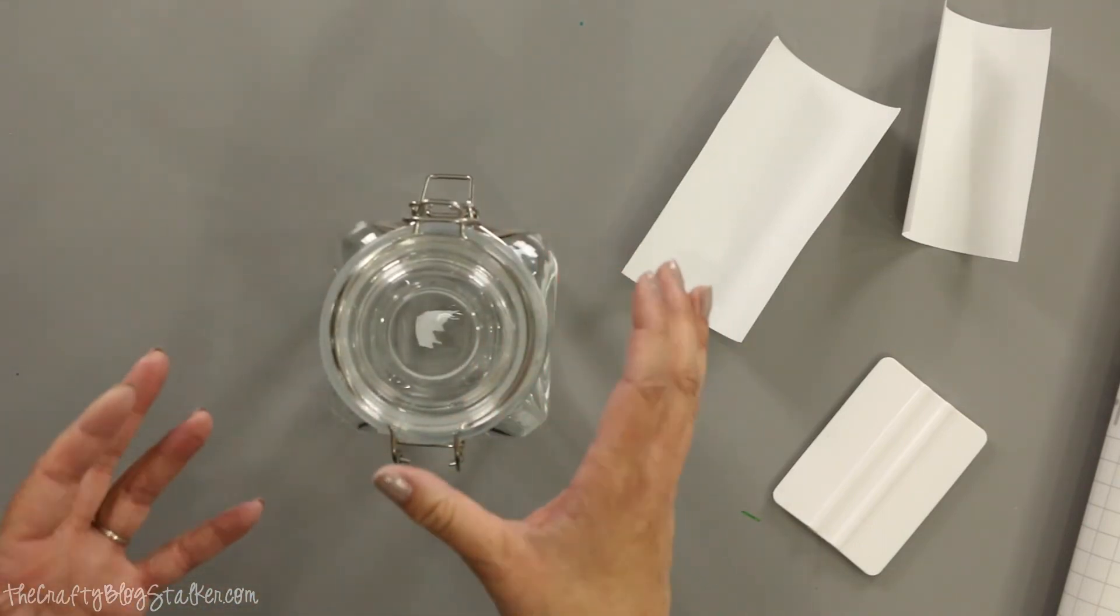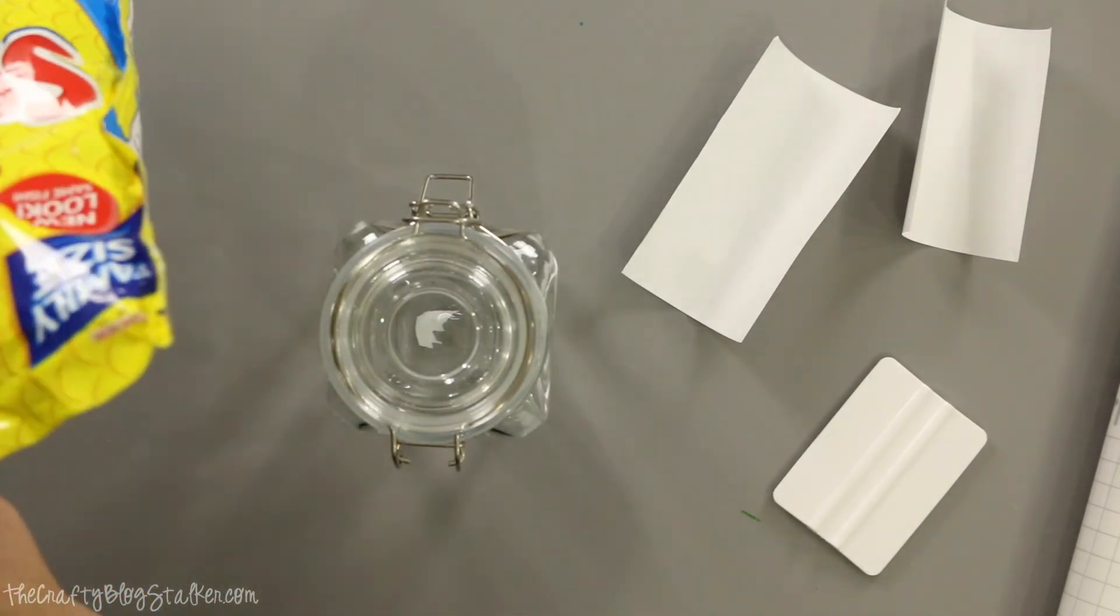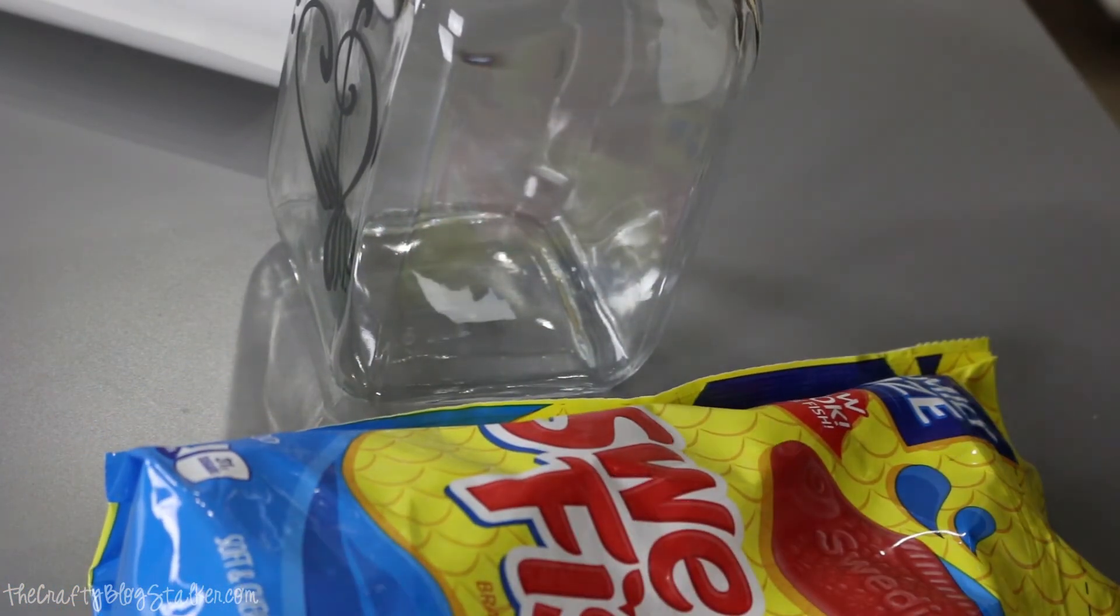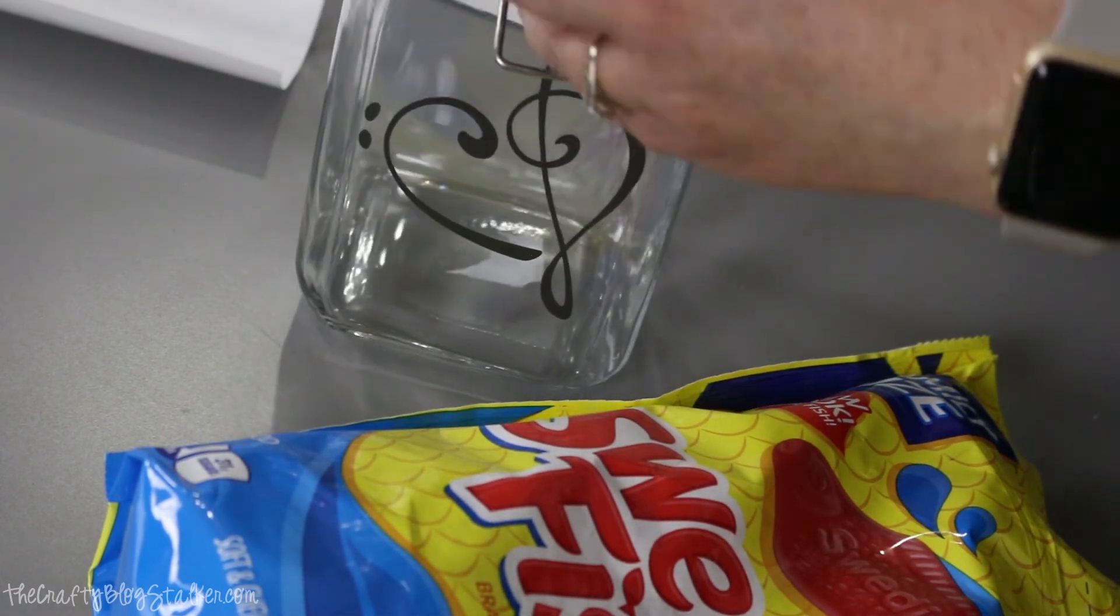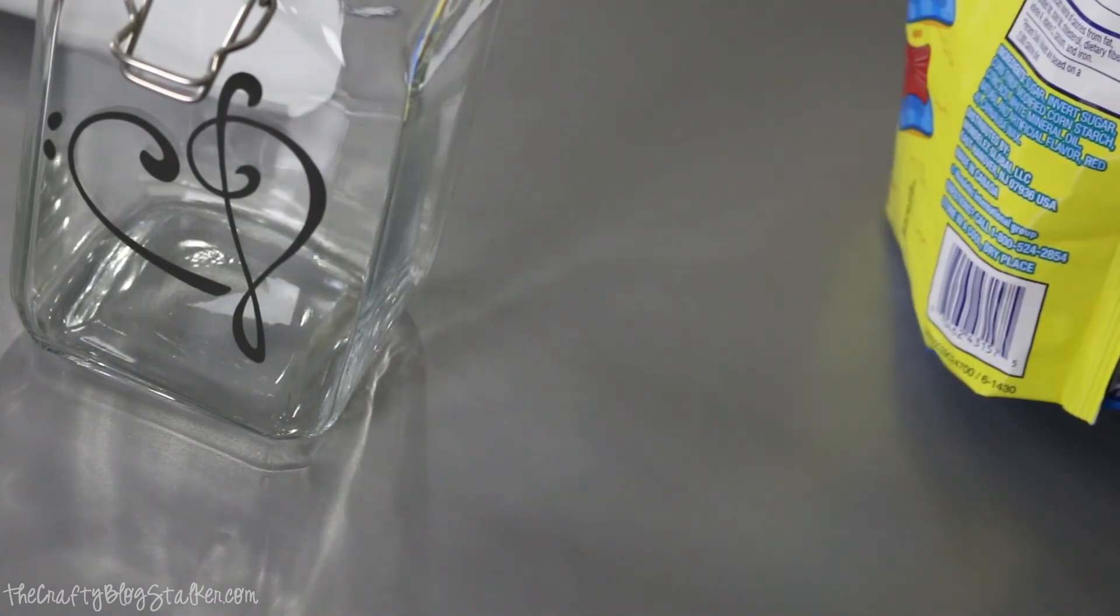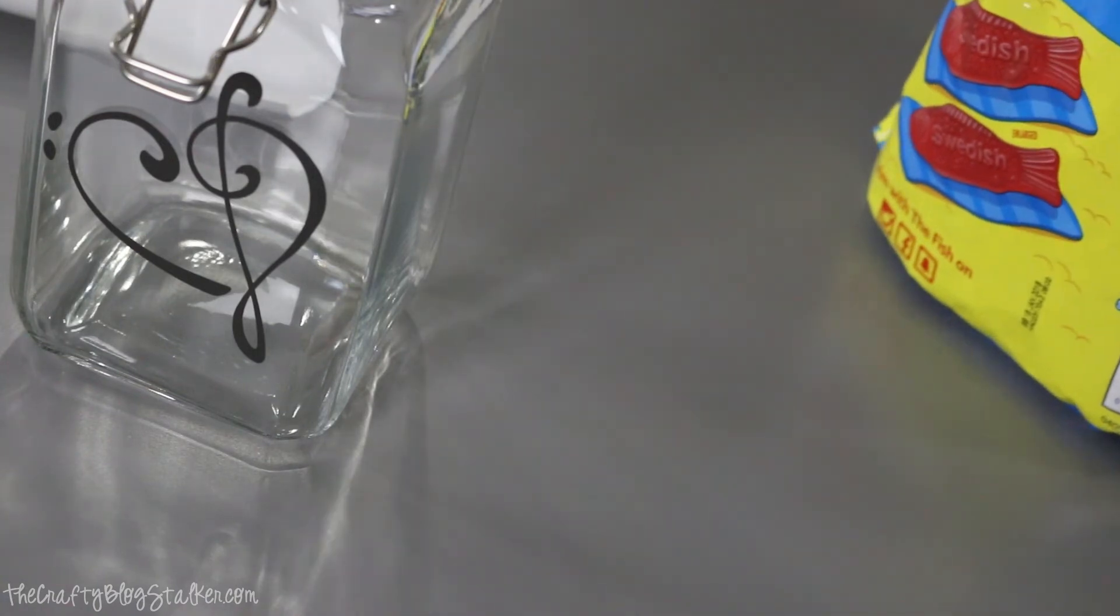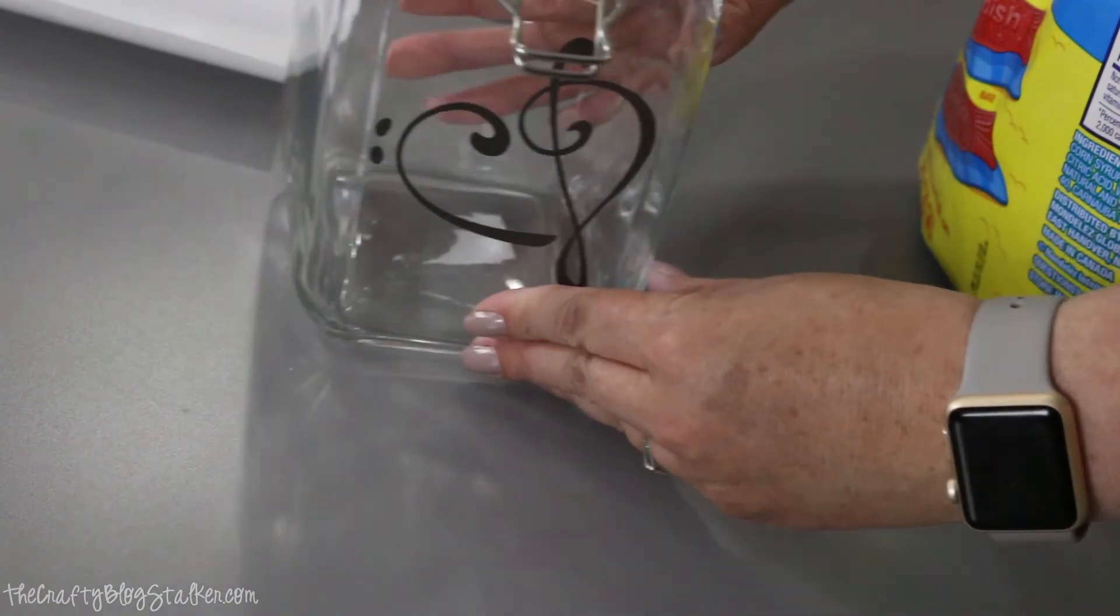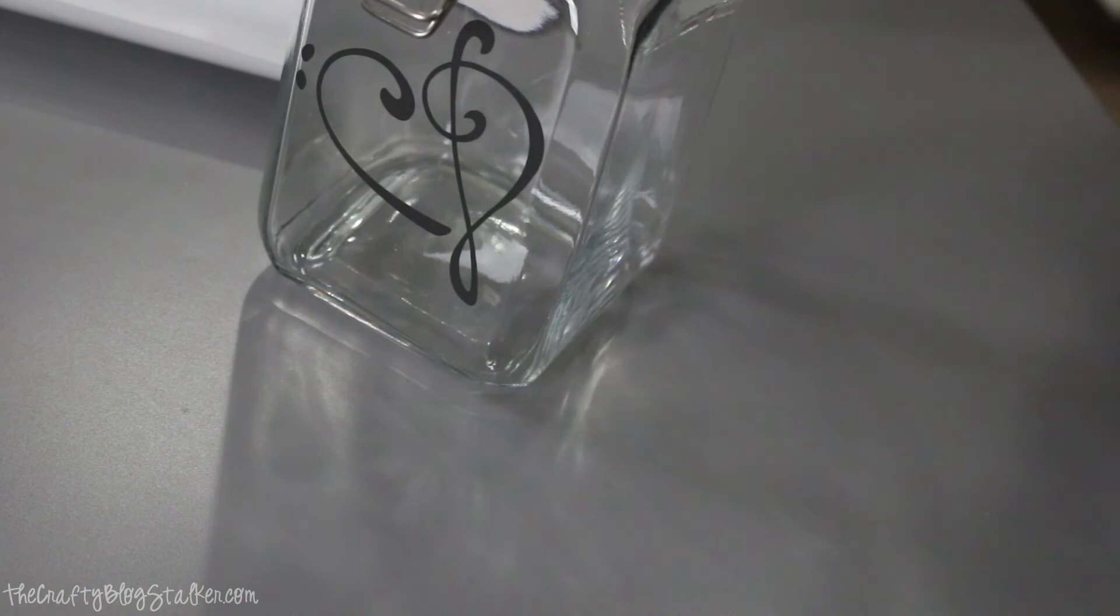But to finish it off, remember how I said she likes Swedish fish. This is the best part of the jar. So again, I've already washed out the jar. So I'm going to open it up. I'm going to open this Swedish fish and hope that all of them don't fit so I have to eat some. And we are going to just pour those right in.